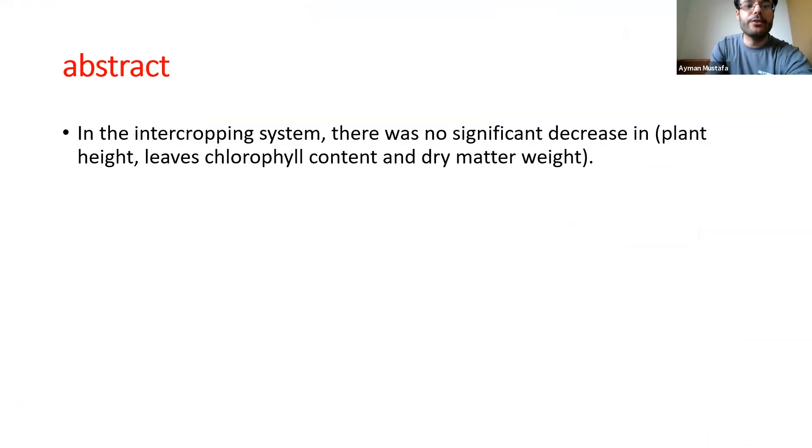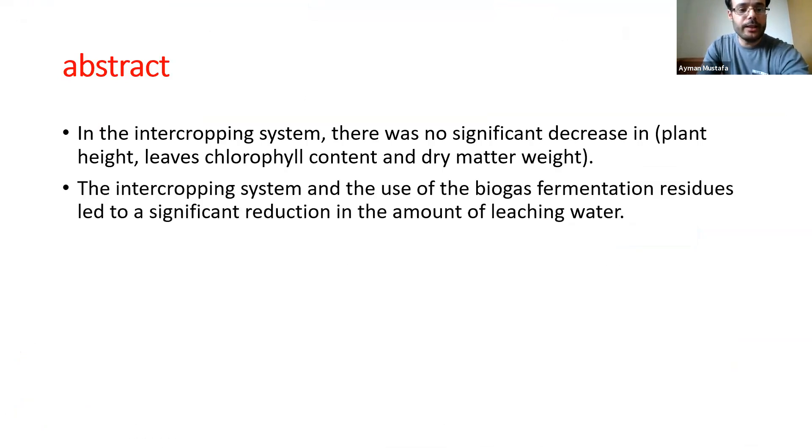We can summarize that in the intercropping system there was no significant decrease in height of the plants, level of chlorophyll content, and dry matter weight. In the intercropping system with the use of biogas fermentation residues, we've noticed a significant reduction in amount of leaching water.